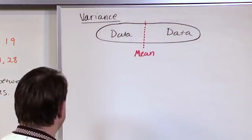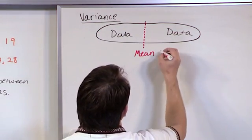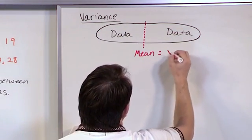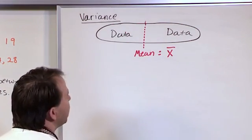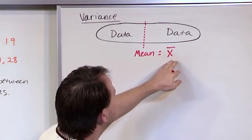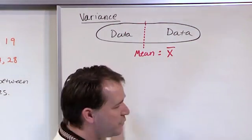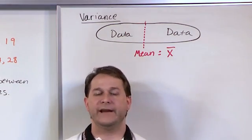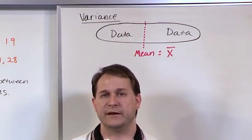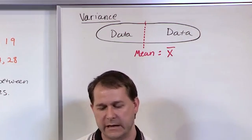And we use the x-bar notation when we're talking about sample data, right? This is the sample mean. And the way you get it is you add all the values up in your sample and you divide by the number of samples, and then you get that number that represents the mean of the sample.